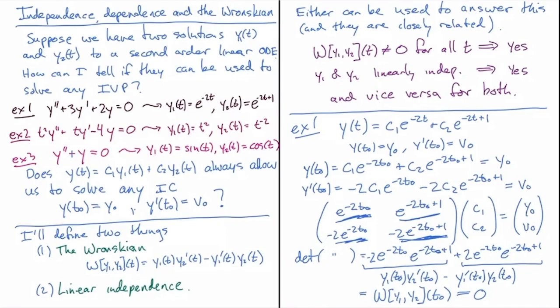That's example one — a case where the Wronskian equals zero, so this does not form a general solution. You can work through examples two and three on your own with the same calculation. For both of them, you should find the Wronskian is not equal to zero for all values of t. An interesting fact: when y1 and y2 are solutions to the same second-order linear differential equation, the Wronskian is either exactly zero everywhere, or non-zero everywhere.